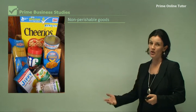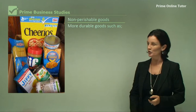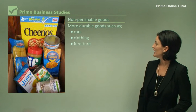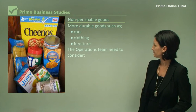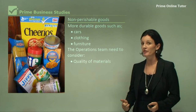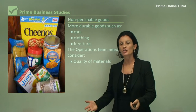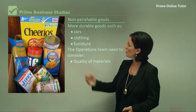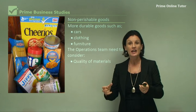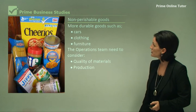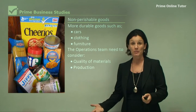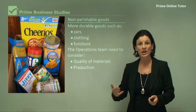Non-perishable items are more durable goods such as cars, clothing, and furniture. The operations manager faces completely different considerations. They need to consider the quality of the materials — for example, if you buy a non-perishable item like peanut butter from the supermarket, you expect that the glass packaging is in excellent order. The production can be more time consuming for the business, and therefore there may need to be quality checks along the way.